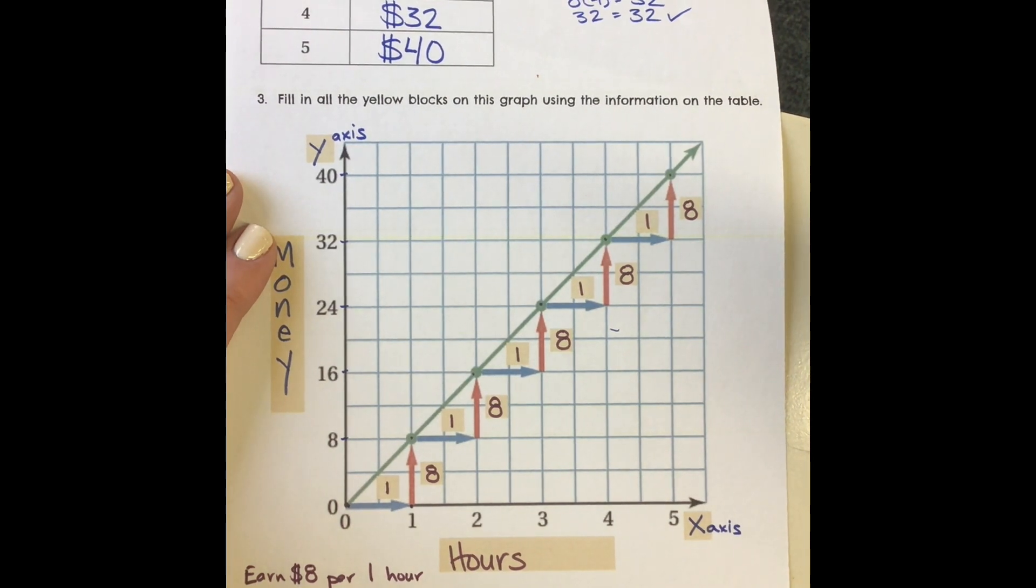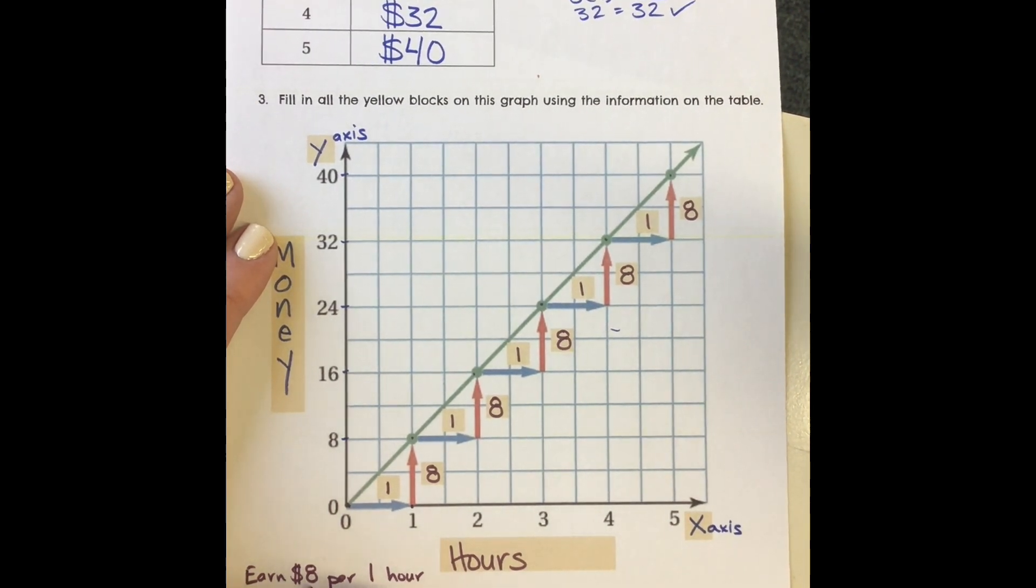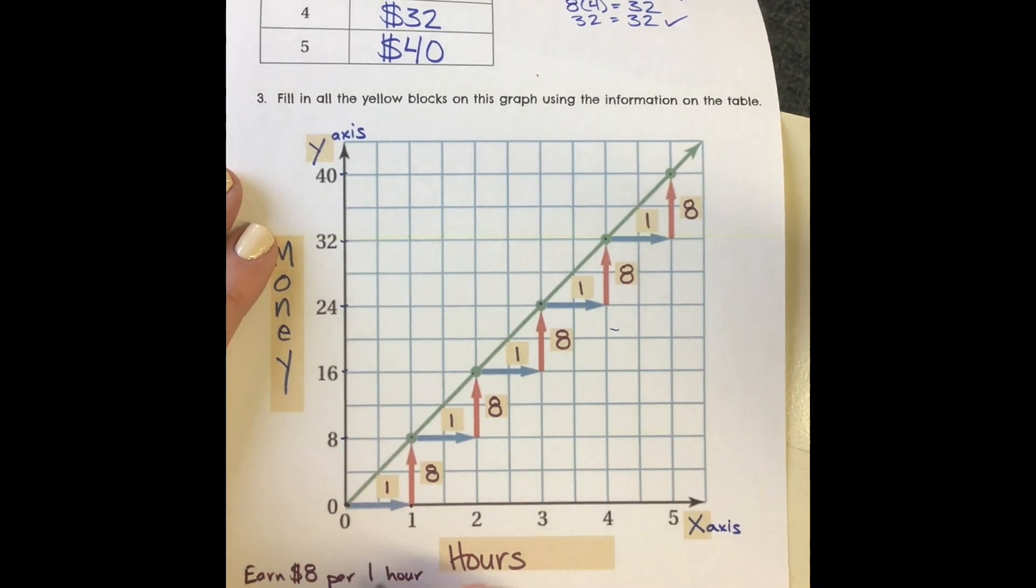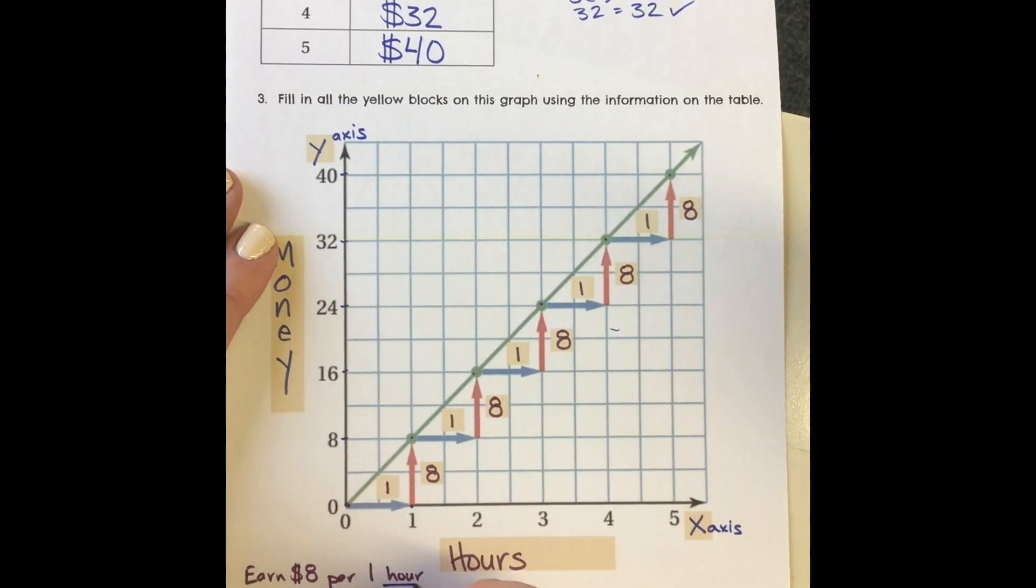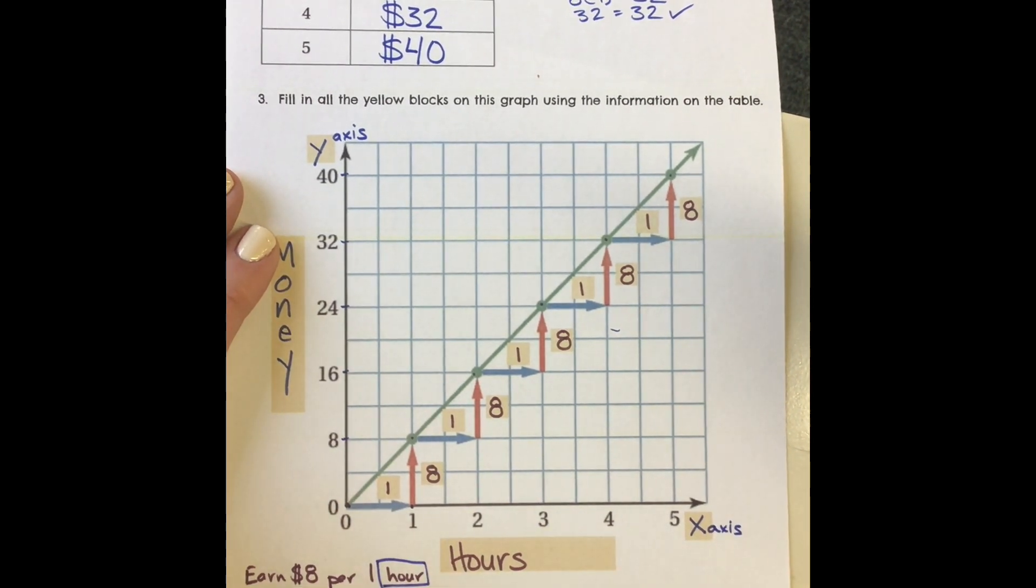I can convert that and say, 8 times the number of hours equals the money I can earn. So 8 times the number of hours equals the money I earn.